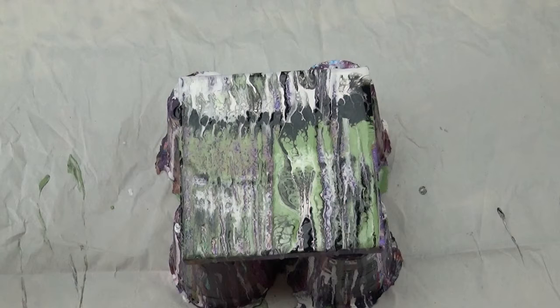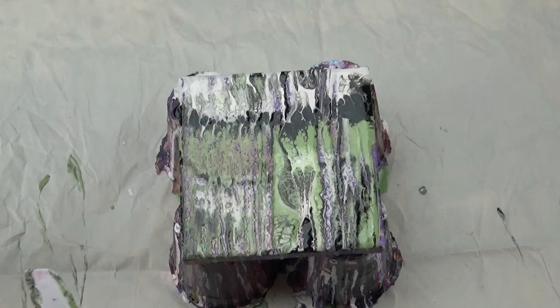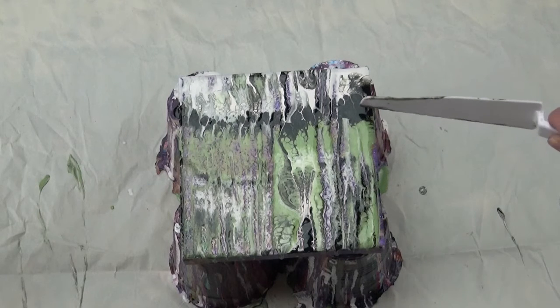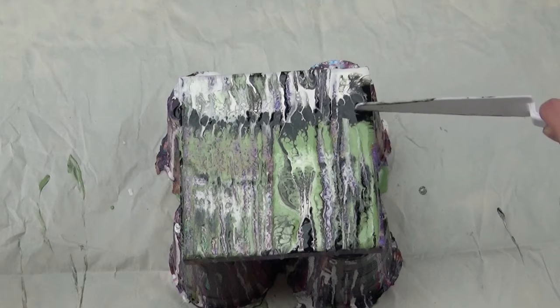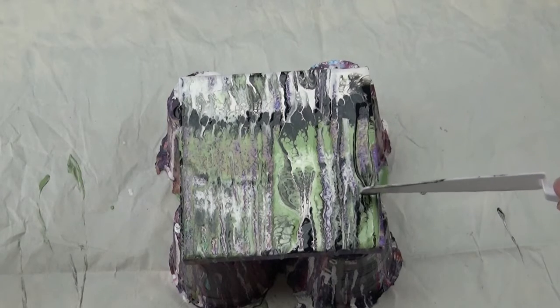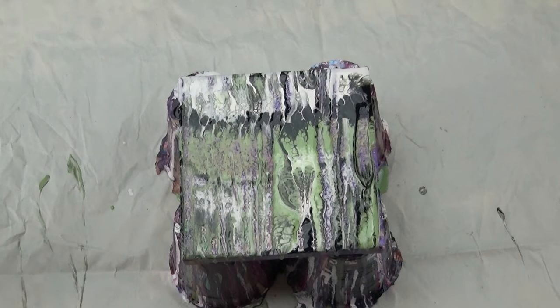They're basically canvas that is glued to a really thick piece of mat board or something like that. It will warp. There's so much paint in acrylic pours that it will just make the board bend.